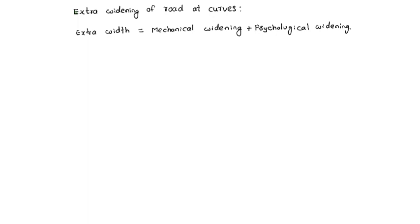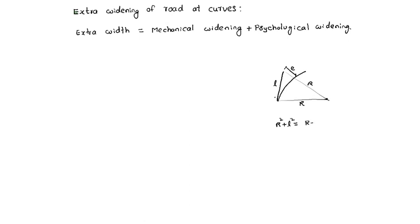Mechanical widening per lane: suppose a heavy curve is like this. The vehicle's front wheels and back wheels — the back wheels do not follow the front wheels. Suppose vehicle length is like this, and this is the radius of the curve. The extra required: this is radius R, this is the length of the wheelbase L. Then R² + L² = (R + E)².